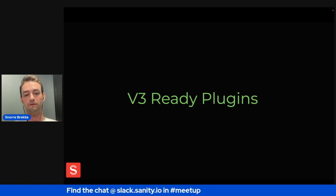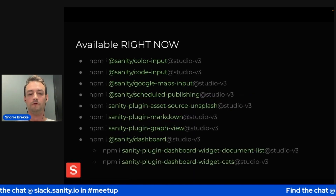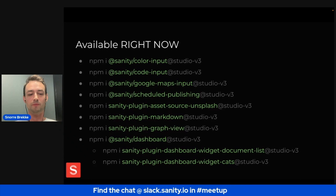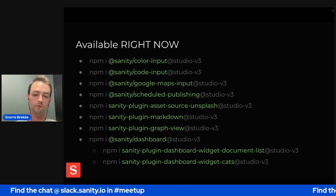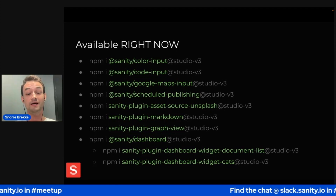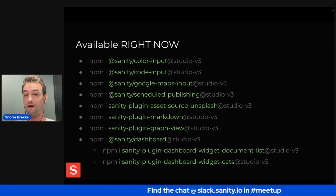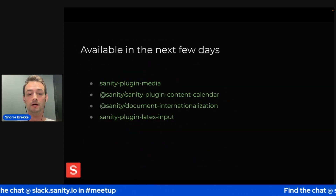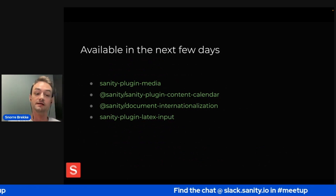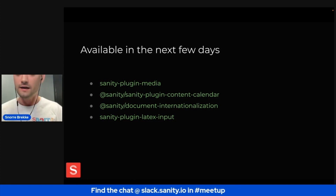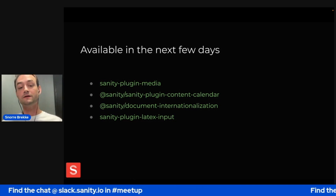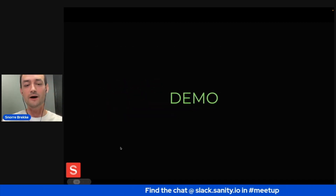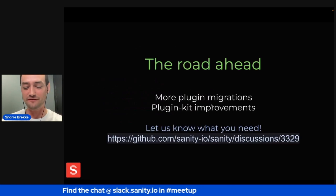Which plugins are ready right now? Color input, code input, Google Maps input, scheduled publishing, source Unsplash, plugin Markdown, graph view, dashboard with document list, and — most importantly — the cat widget. What will be ready in one or two days? Media plugin, content calendar plugin, document internationalization, and LaTeX input. Following that, we'll be monitoring the community to see what you'd like to see next.